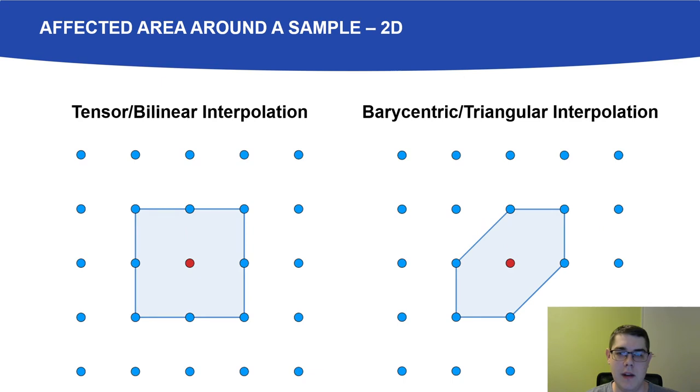In bilinear interpolation, this area is a square, while with barycentric interpolation, it is a somewhat smaller shape.